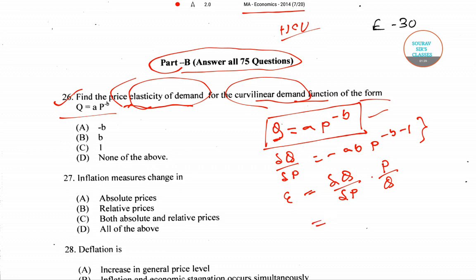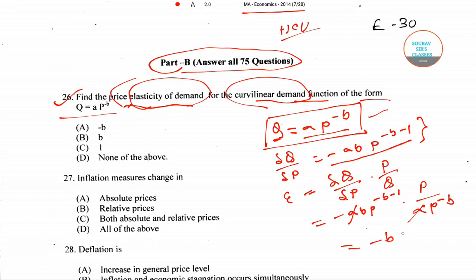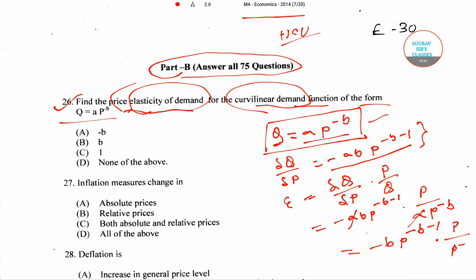Substituting our findings: dQ/dP = −AB·P^(−B−1), and P/Q where Q = A·P^(−B). Plugging these in, the A's cancel out, leaving us with −B · P^(−B−1) · P / P^(−B), which simplifies further.